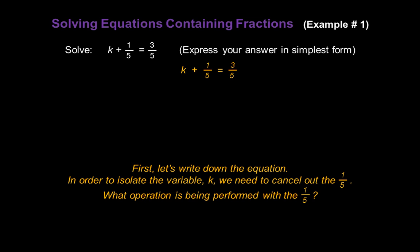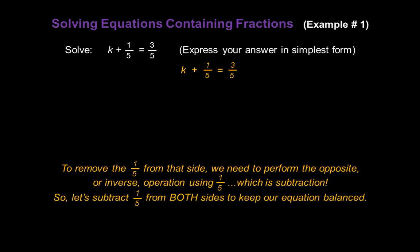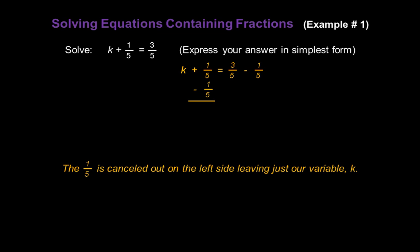What operation is being performed with one-fifth? The one-fifth is being added to k, so to remove or cancel the one-fifth from the left side, we need to perform the opposite or inverse operation — and that's subtraction. So let's subtract one-fifth from both sides to keep our equation balanced. The one-fifth is canceled out on the left side because one-fifth minus one-fifth is zero, and that leaves us with just our variable k isolated on the left.